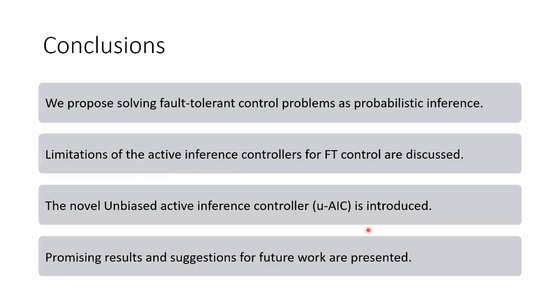So to conclude, we propose to solve fault-tolerant control problems as probabilistic inference. We discuss previous work which talked about the Active Inference controller, and we discuss its limitations for fault-tolerant control in detail. Then to overcome all these limitations, we make a small change, which results in the Unbiased Active Inference controller, which can be easily used in conjunction with any existing technique. The results were promising compared to state-of-the-art methods. We could even deal with camera faults with no problems.